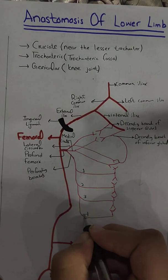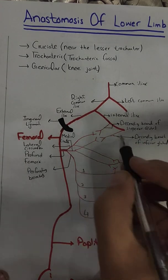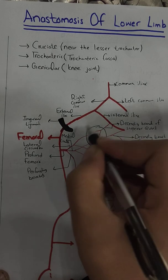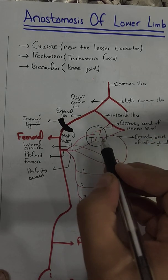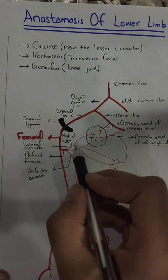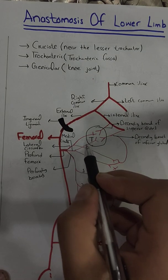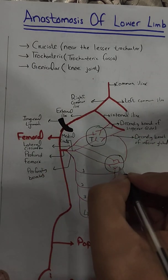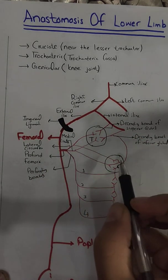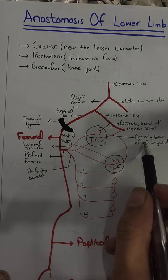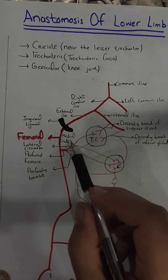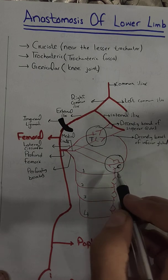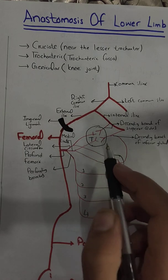There are four arteries participating in the trochanteric anastomosis: the descending branch of the superior gluteal, the descending branch of the inferior gluteal, the ascending branch of the medial circumflex, and the ascending branch of the lateral circumflex. The cruciate anastomosis also has four branches: the descending branch of the inferior gluteal, the transverse branch of the medial circumflex, the transverse branch of the lateral circumflex, and the first perforating branch.